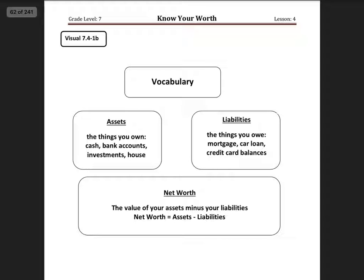A liability is like your mortgage, your car loan, your credit card balances — all of those are liabilities. A house loan is a mortgage; that's the other word for house loan. So what you owe on your house is the mortgage, the house loan. That's a liability.